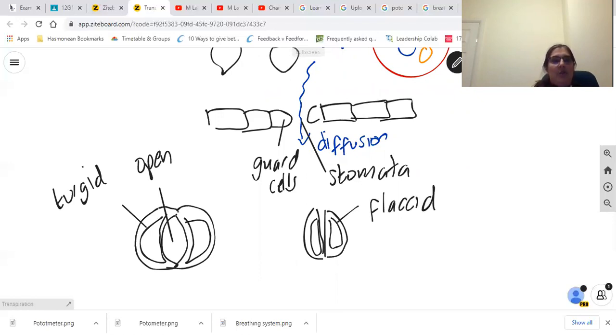In order to open the stomata, water is taken in by osmosis into those cells. Because of the way the cell walls are formed, in that the outer layer of cell walls is thinner than the inner layer, you end up with this curved guard cell and it opens up that stoma in the middle. When water leaves, the cells become flaccid and the stomata close.